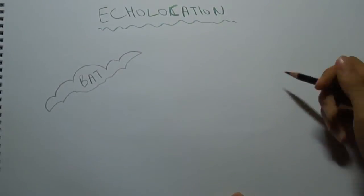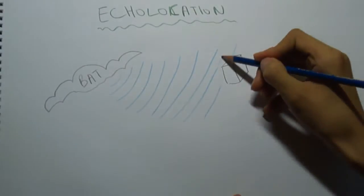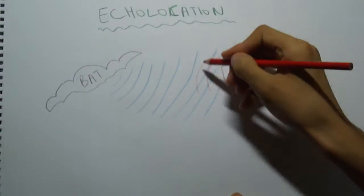One example of an animal that uses echolocation is a bat. Bats send out high-pitched clicks, which bounce off an object and return to it.